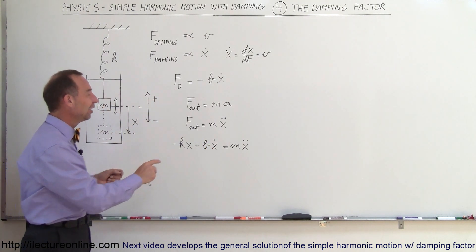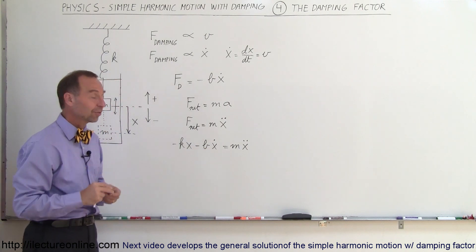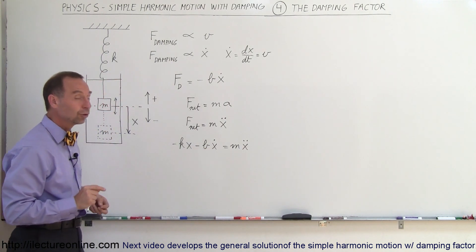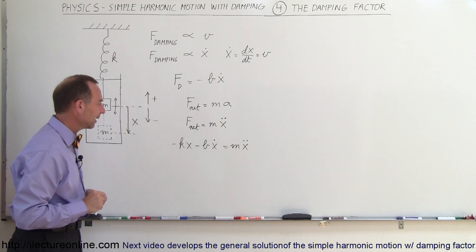It's b times velocity. So b times x dot, or b times velocity, should also be in terms of Newtons. So let's find out what the units for b should be in order to make that happen.